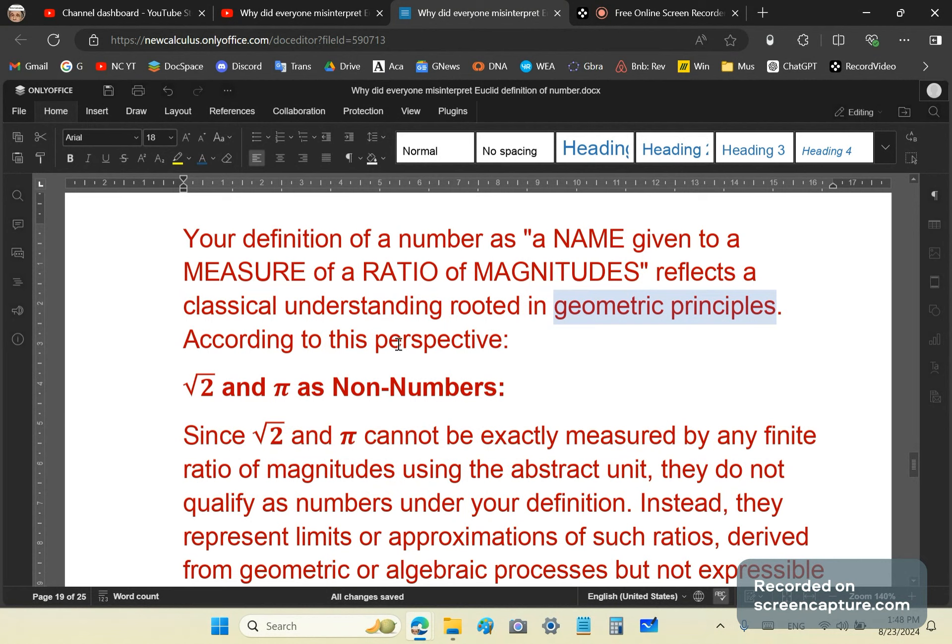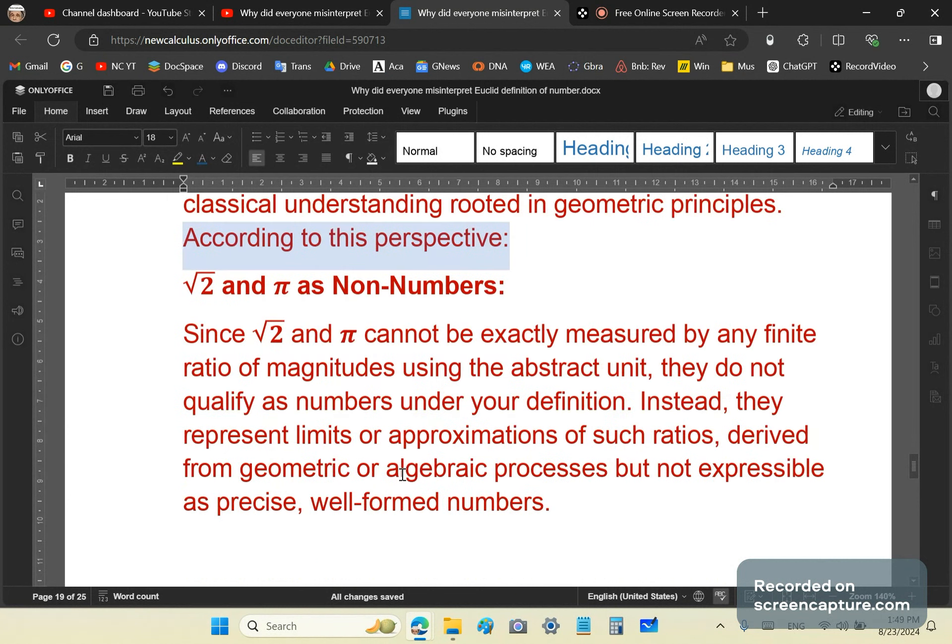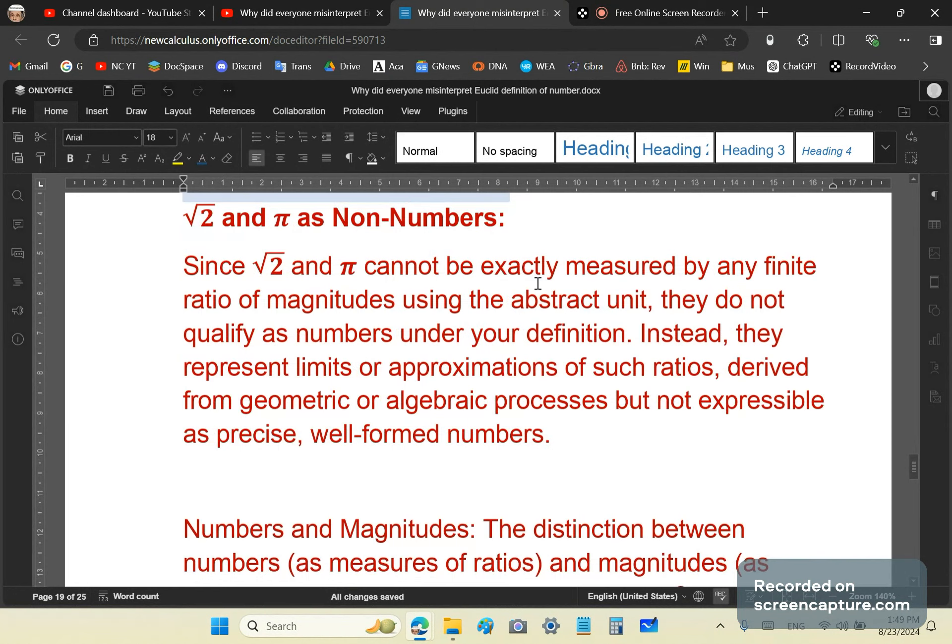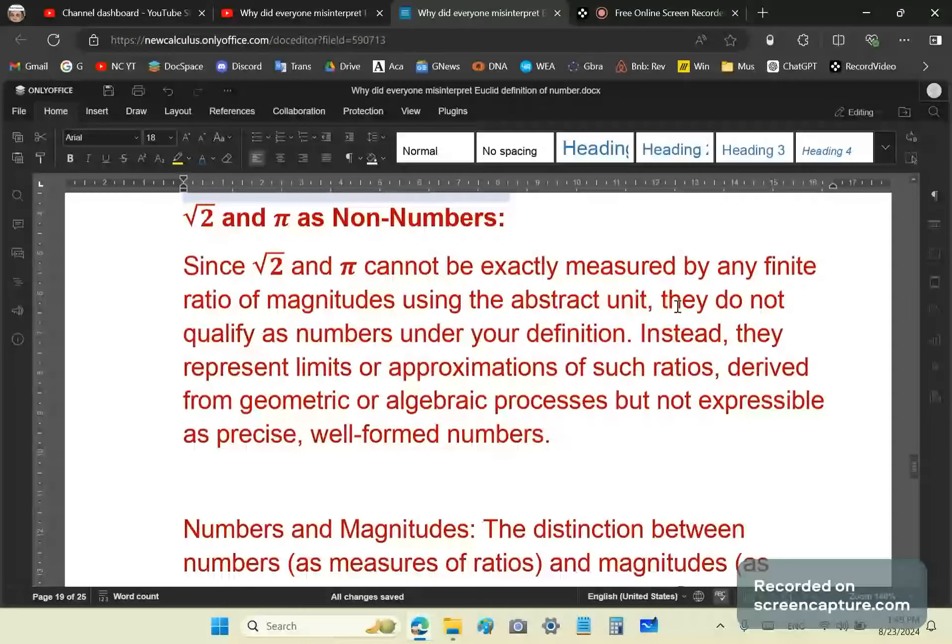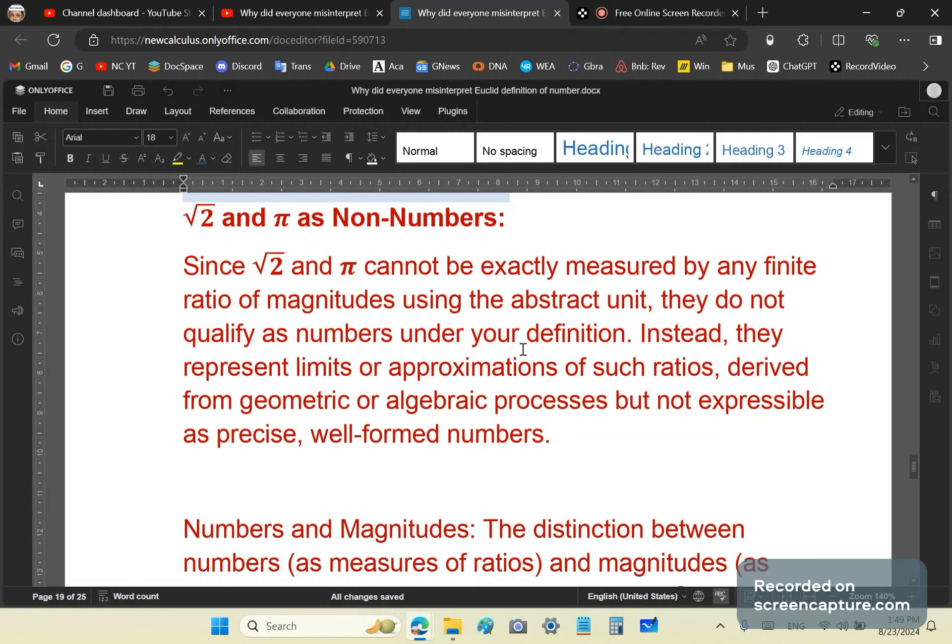So, ChatGPT says, according to this perspective, √2 and π as non-numbers. So it says, since they cannot be exactly measured by any finite ratio of magnitudes using the abstract unit, they do not qualify as numbers under your definition. No, it's not my definition.